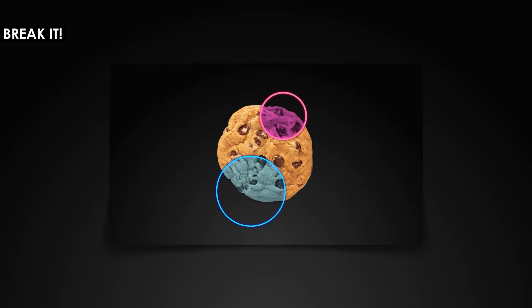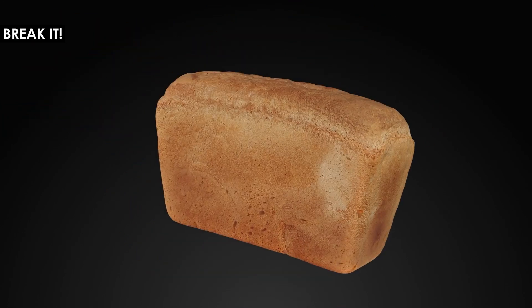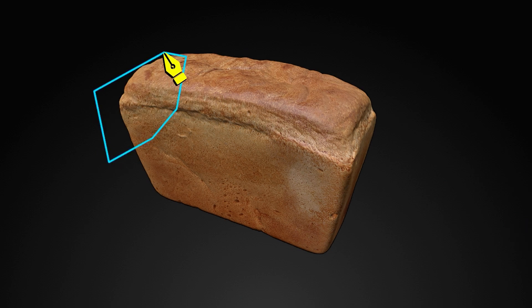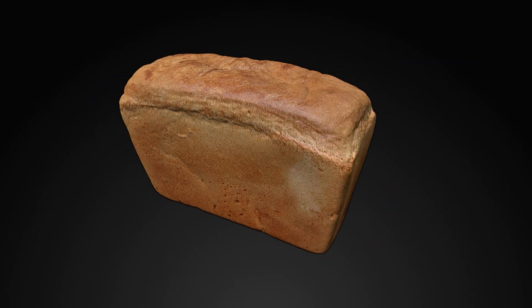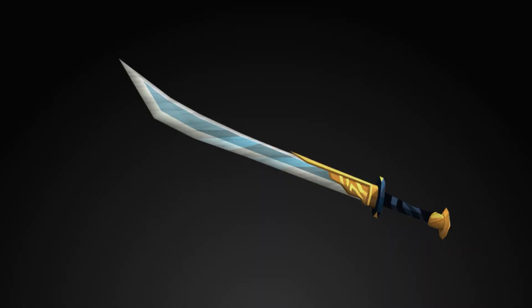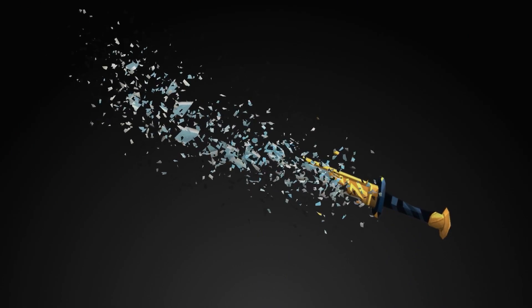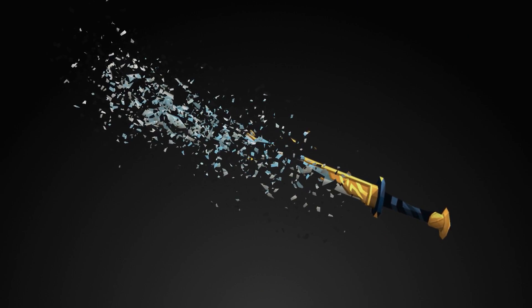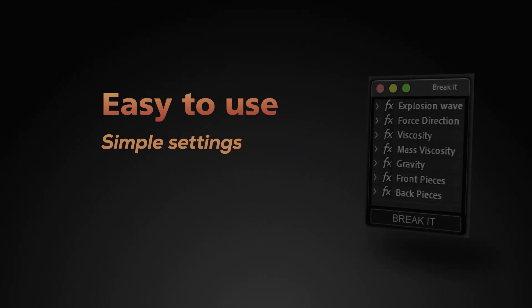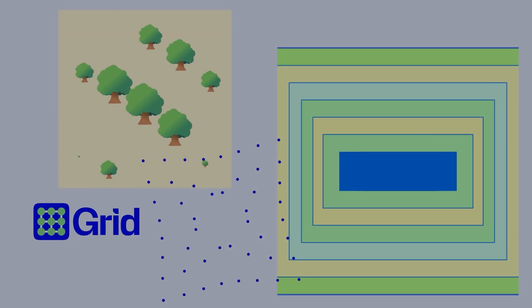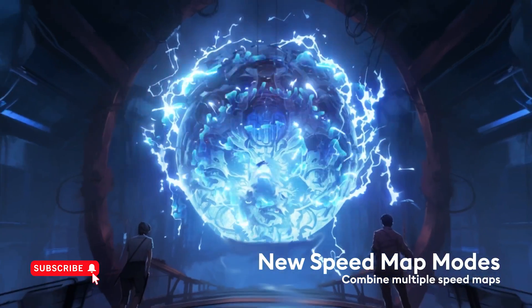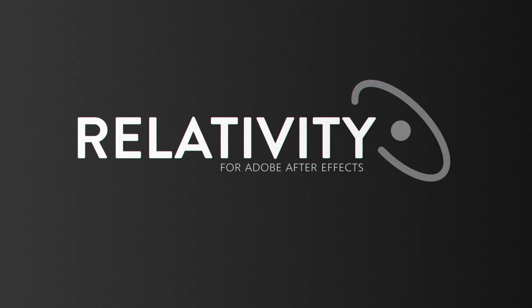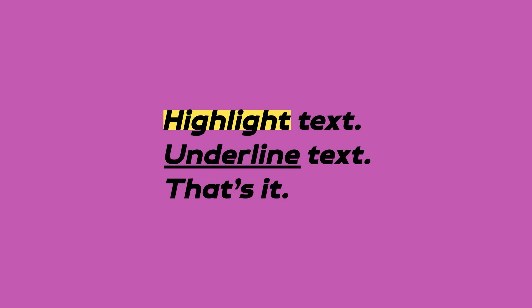With Break It, you can create captivating break effects for your images in just a few clicks. It allows you to achieve multiple breaks at different places. The process involves selecting the subject, masking the desired break locations, and then controlling the break times with markers. It has really simple settings offering control over the explosion wave, force direction, viscosity, gravity, particle size, and number of breaks. So there you have it — 24 plugins to use in 2024. If I missed any cool ones, please let me know in the comments. And if you want to see more plugins, check out all the roundups I did from previous years — those links are also in the video description.